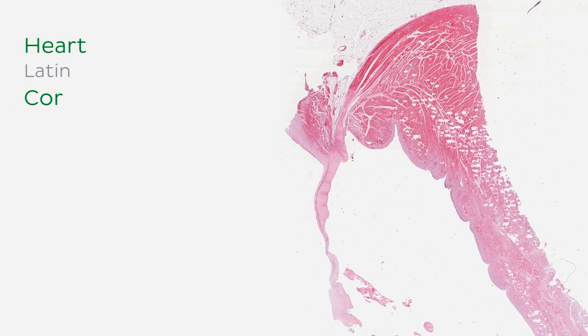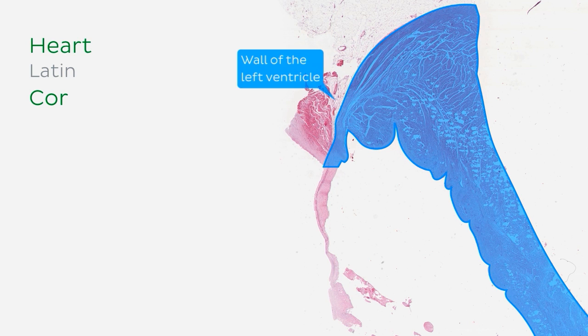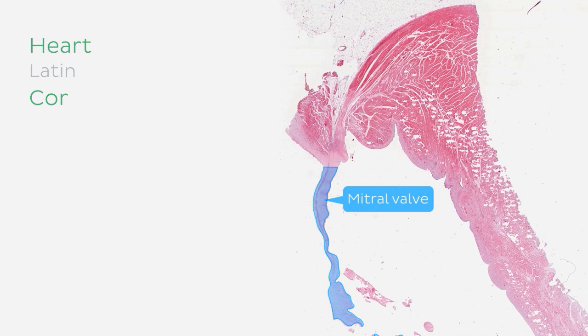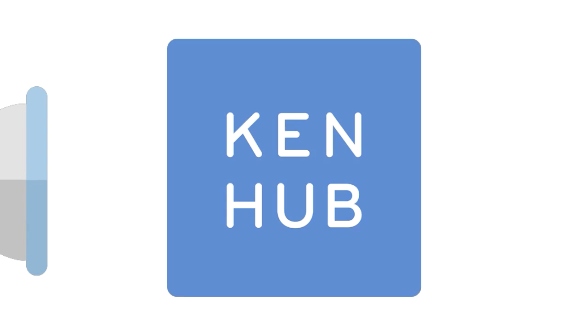So we're now going to start transitioning to the histology of the heart, and the images that we'll look at throughout this tutorial will look similar to this one, as we identify the various components of the heart as seen on a microscopic scale. This slide shows us the wall of the left ventricle as well as the mitral valve, and we'll identify these parts shortly.